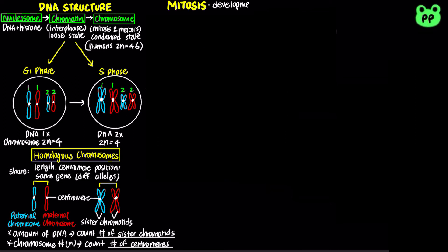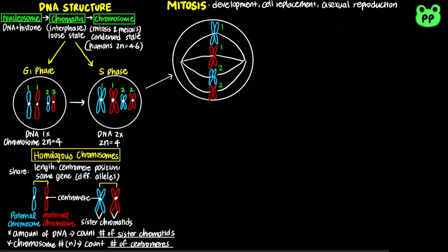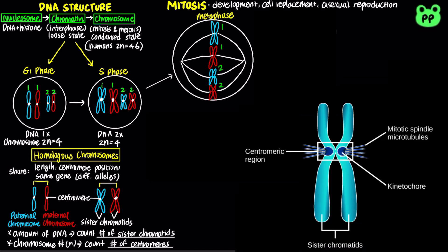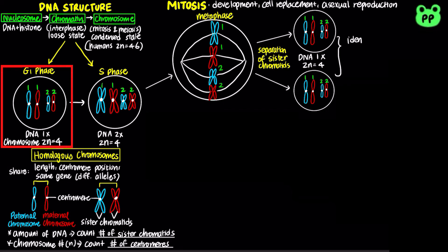Mitosis is important for development, cell replacement, and asexual reproduction in some species. The goal is to produce genetically identical daughter nuclei, essentially cloning the cell. Mitosis consists of prophase, prometaphase, metaphase, anaphase, and telophase. During metaphase, each individual chromosome aligns in the middle of the cell, and each pair of sister chromatids is attached to two kinetochore microtubules coming from opposite poles. Mitosis results in the separation of sister chromatids, forming two identical daughter cells with the same amount of DNA and chromosome number as the mother nucleus at G1 phase.